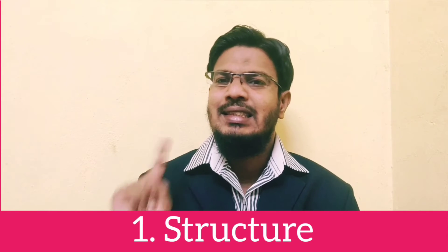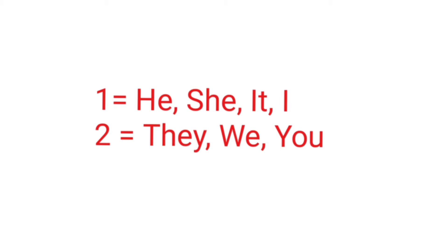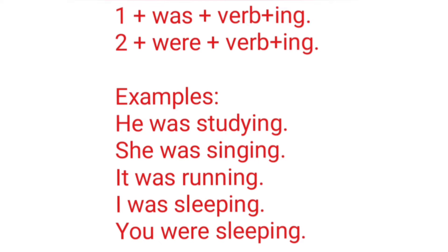Number one structure: subject one (he, she, it, I) takes 'was' plus verb plus ing. Subject number two (they, we, you) takes 'were' plus verb plus ing. Examples: he was studying, she was singing, it was running, I was sleeping, you were sleeping.